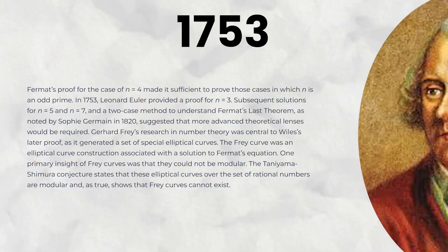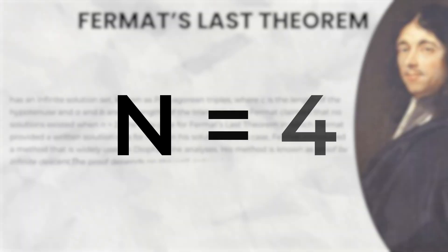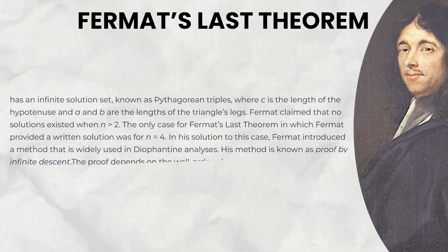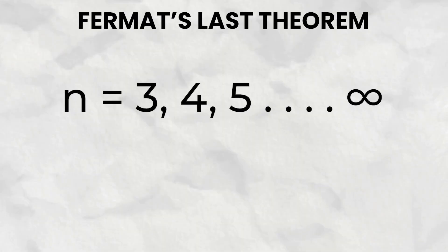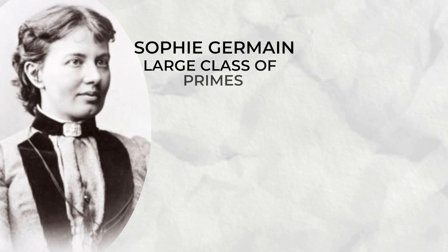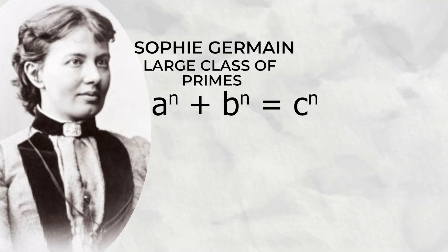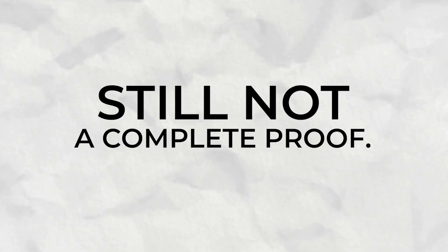In 1753, Euler proved it for the case n is equal to 3. Fermat himself proved it for n is equal to 4, and in the 19th century, it was proven for n is equal to 5. But there are an infinite number of values of n to be solved for, so individual number solutions don't work. Sophie Germain proved the theorem for a large class of primes, while Ernst Kummer proved it for all regular primes. But again, this isn't a full proof for the problem.